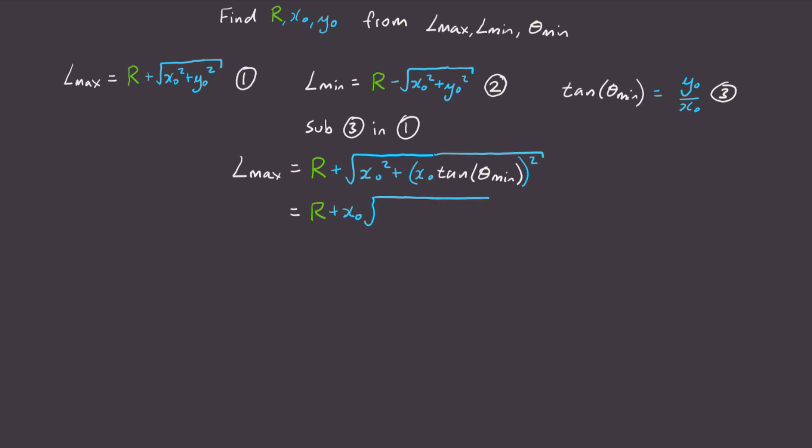That way, we can factor out the x0 term, and we have this. Nice. And this square root term is actually just one divided by cosine theta min. So let's plug that in. Now what we have to do is rearrange to solve for x0.